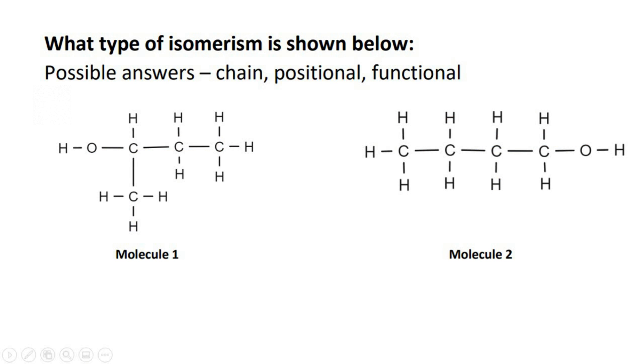We need to determine the type of isomerism that we can see here. If you look on the left hand side there would be four carbons: one, two, three, four. If you look on the right there would also be four.